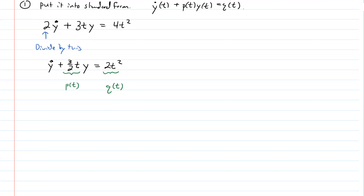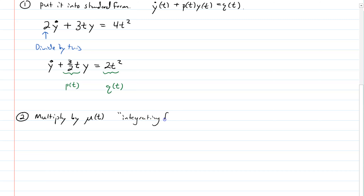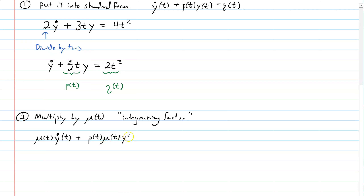The second step is you multiply by a function called mu of t. Mu of t is called an integrating factor, and we'll talk about what properties this mu of t has to obey in order for it to work. Right now it's just a function mu of t which I'm going to multiply both sides by, so I get mu of t times y-dot of t plus p of t times mu of t times y of t equals mu of t times q of t. So what's the point of that? The key is that if this function mu satisfies certain properties, we'll be able to write the left side as a total derivative.